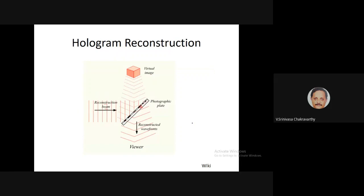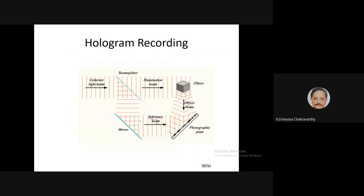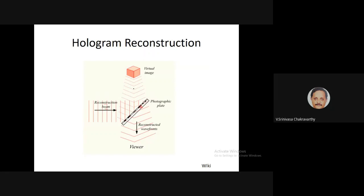To recreate a visual of that object, you take the same photographic plate and pass a reconstruction beam — another coherent laser beam — through it. On the other side, because of the black-and-white interference pattern on the photographic plate, it distorts the incoming beam and produces a face pattern corresponding to the original object.